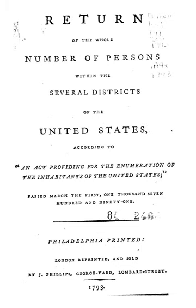Census data included the name of the head of the family and categorized inhabitants as follows: free white males at least 16 years of age, to assess the country's industrial and military potential; free white males under 16 years of age; free white females; all other free persons reported by sex and color; and slaves.